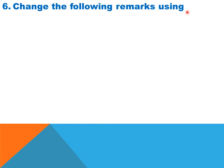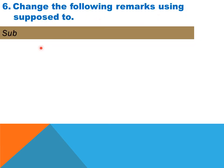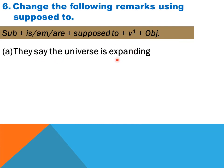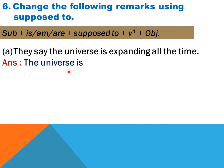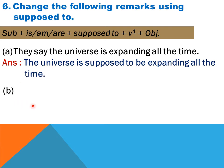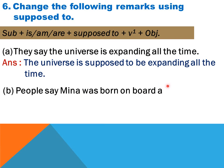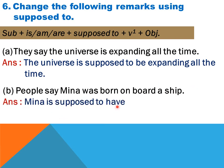Question 6: change the following remarks using 'supposed to.' The structure is: subject + is/are + supposed to + be + verb-ing (for present continuous reporting) or supposed to + have + past participle (for past reporting). Example: 'They say the universe is expanding all the time' becomes 'The universe is supposed to be expanding all the time.' B — 'People say Mina was born on board a ship' becomes 'Mina is supposed to have been born on board a ship.'